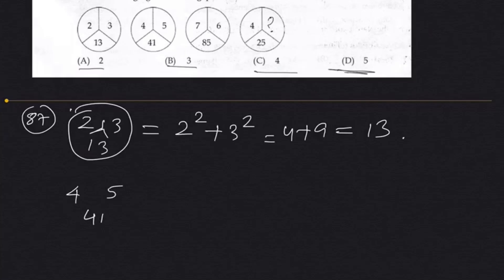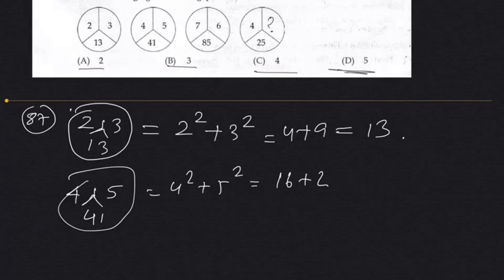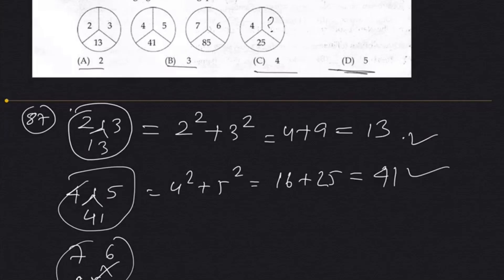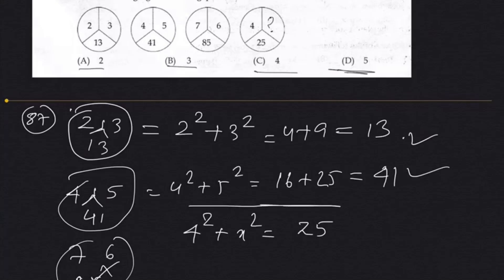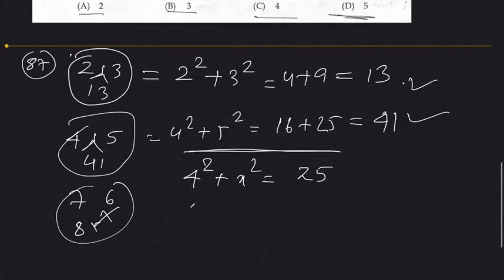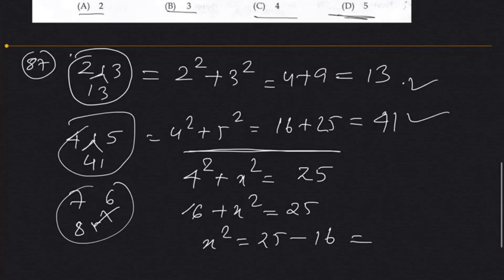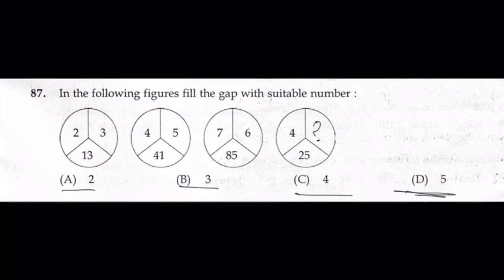Since we have found the relation, the third set has 4 and x giving 25. So 4 squared plus x squared equals 25, meaning 16 plus x squared equals 25, so x squared equals 9, therefore x equals 3. The answer is 3.